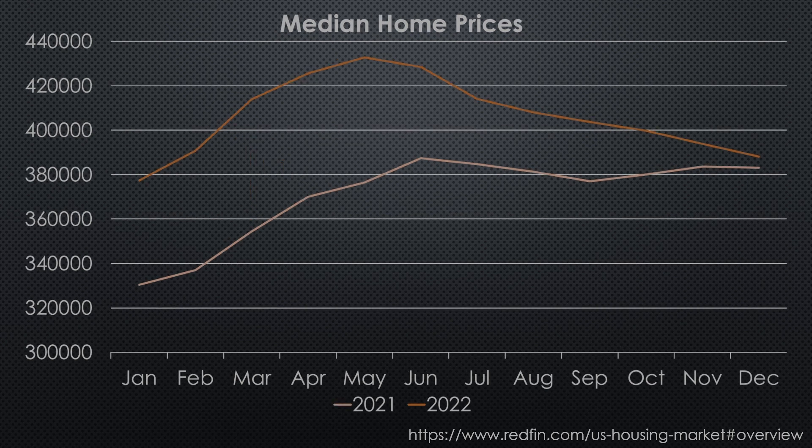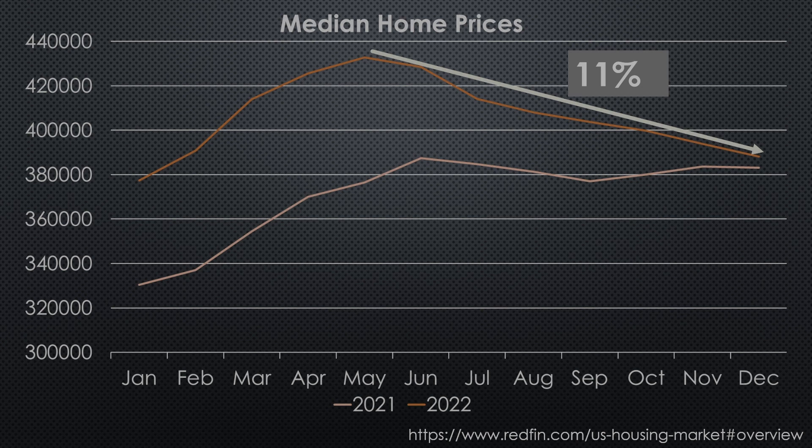Here's the same graph, this time with an arrow showing the general trend of 2022 home prices from June to December. As you can see, home sales prices have fallen about 11% from their summer peak.